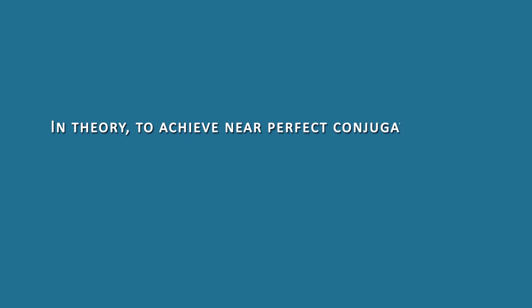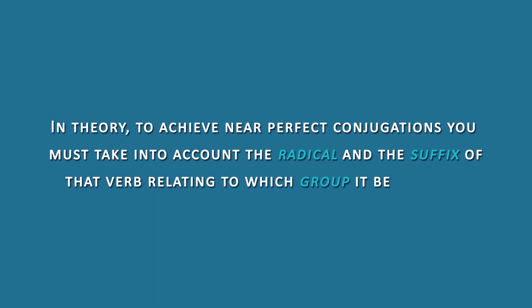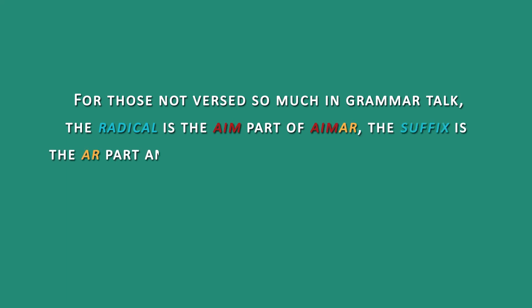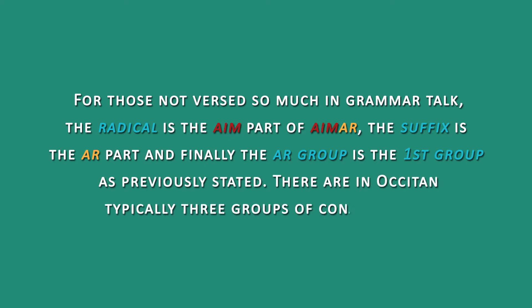In theory, to achieve near-perfect conjugations, you must take into account the radical and the suffix of the verb relating to the group it belongs to. For those not versed in grammar talk: the radical is the AIM part of AIMAR, the suffix is the AR part. In Occitan, there are typically three groups of conjugations.